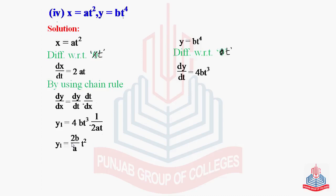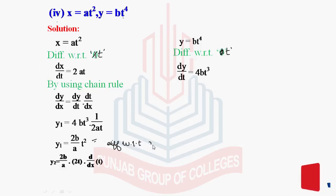Now y1 equals — simplifying — the 2s cancel, b remains, a remains, and t³ divided by t gives t². So y1 = 2bt²/a is our required first derivative. Now for y2, we differentiate y1 again with respect to x, as explained in part 3. Although y1 is a function of t, to find y2, which is d²y/dx², we must differentiate with respect to x.